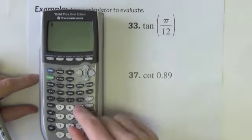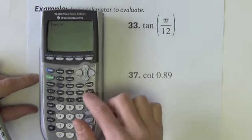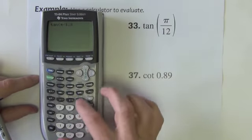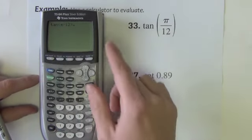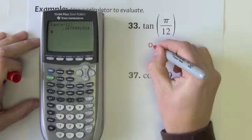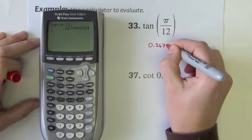I want tangent of pi over 12. So hit the tangent button. The pi. Please use the pi button. Do not use a decimal for pi. Use the pi button. So tangent of pi divided by 12. Hit enter. Again I'm going to use four decimal places. 0.2679.